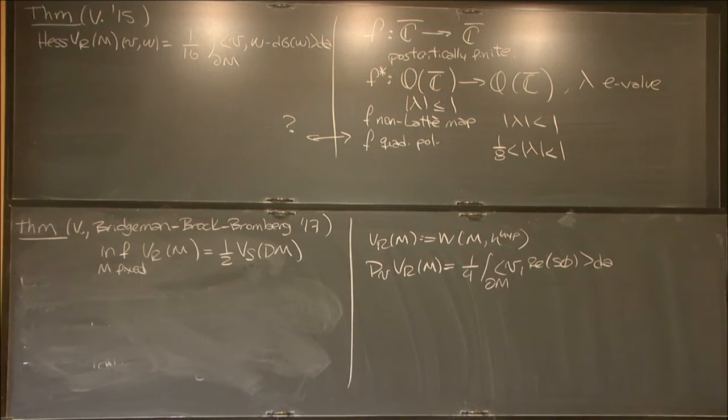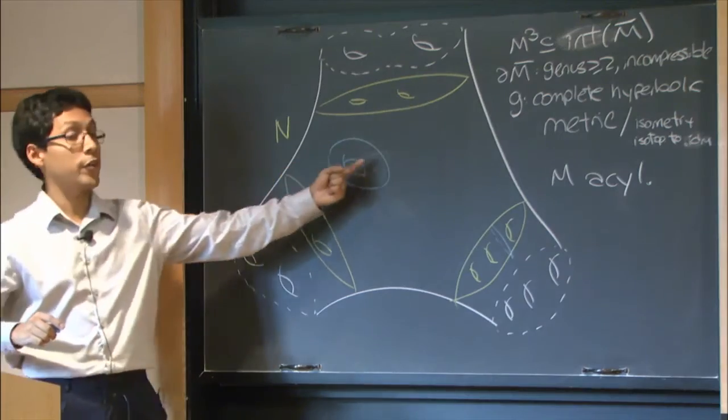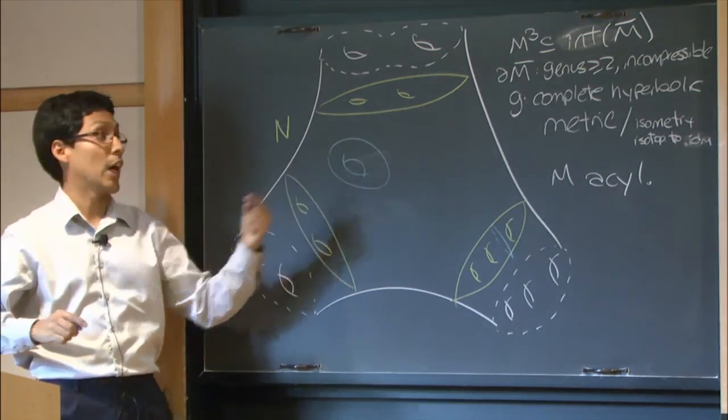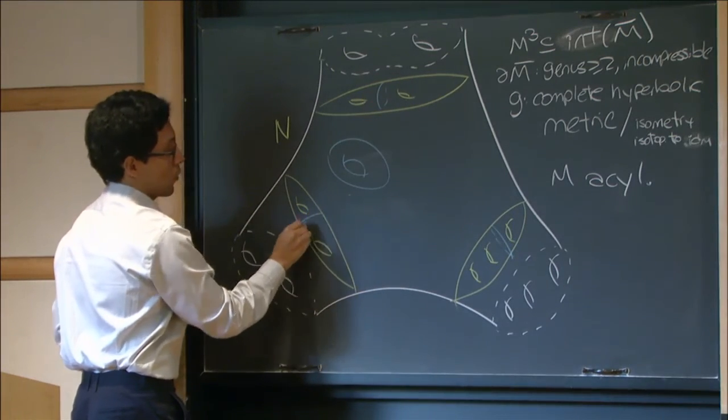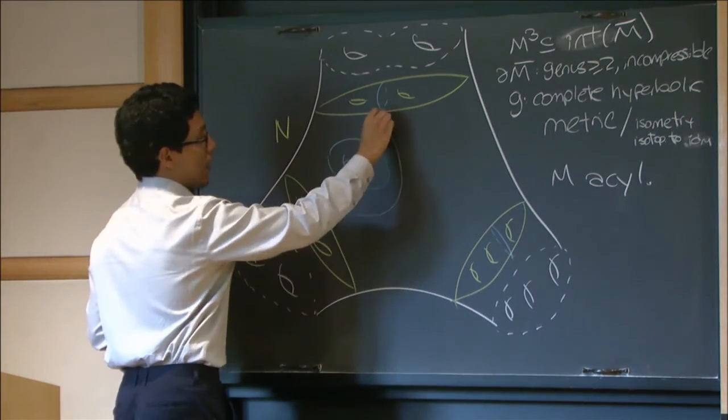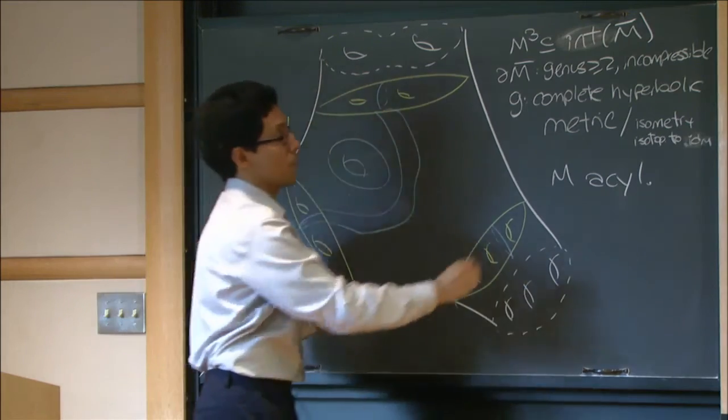There are basically three ways in which when we take a sequence going to the infimum, the topology of M is going to break. One is going to be we could have a boundary curve here whose length is going to zero, which is going to create a rank one cusp for us. We could also have a non-boundary parallel curve whose length is going to zero, in which case we will drill a curve here and we will create a rank two cusp.